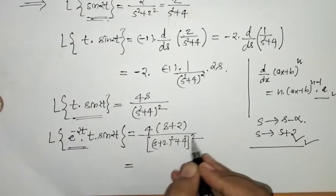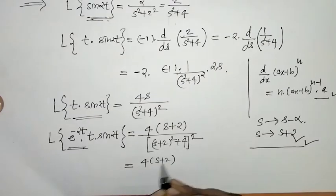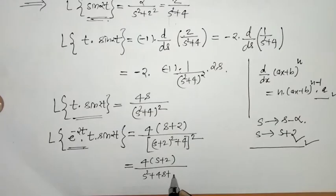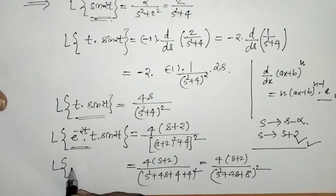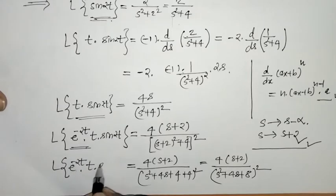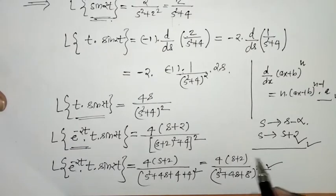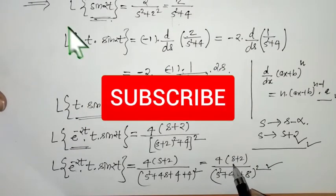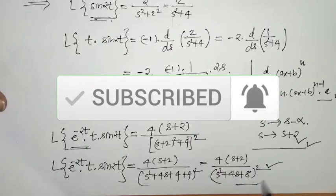If we want, we can simplify further. We have found the Laplace of e^(-2t) · t · sin(2t). We got this Laplace: 4(s+2) upon (s² + 4s + 8), whole square.